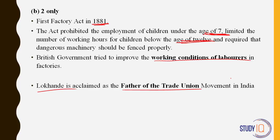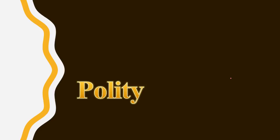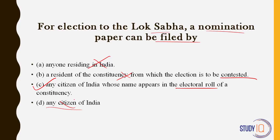Coming to the polity questions — 22 questions from polity. First question: for election to the Lok Sabha, a nomination paper can be filed by — anyone residing in India? Obviously not, as people from other countries also reside here. A resident of the constituency being contested? No, many politicians fight elections from other states. Any citizen of India whose name appears in the electoral roll of a constituency? Yes, this is correct. You must be a registered voter to be eligible to file your nomination. Any citizen of India? No — if a citizen has criminal cases proved against him he cannot fight elections, as in the example of Lalu Prasad Yadav. The correct answer is: any citizen whose name appears in the electoral roll.